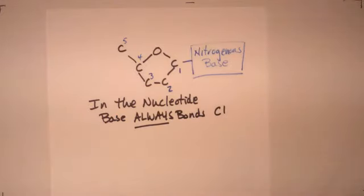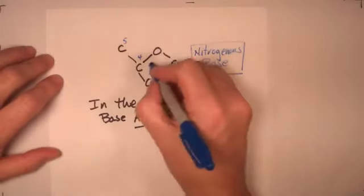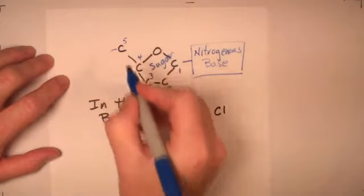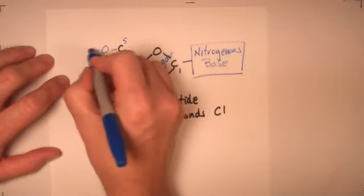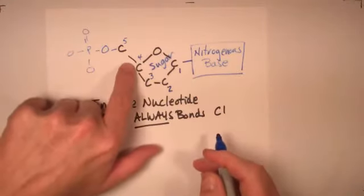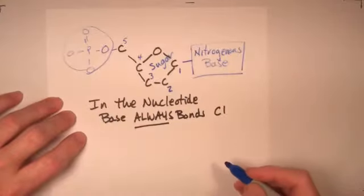Now, remember that we talked about the nucleotide having three parts, and those three parts are a phosphate group, a pentose sugar, and one of the nitrogenous bases. So the last piece then, because we've got our base here, we've got our sugar here in the middle, the last piece is going to be the phosphate group. And the phosphate group bonds to C5, to the fifth carbon, right here.